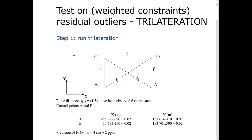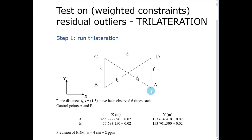Hello, everyone. In this video lecture, we're going to discuss the test on residual outliers. We're going to use the example that we discussed in class dealing with trilateration. Here's the situation of a trilateration — in this case, it's a quadrilateral, and trilateration means that we are measuring the distances between these points.